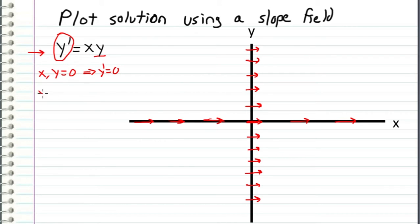Now whenever y is equal to 1, then the value of y prime is just going to be x because x times 1 is equal to x. So when x is equal to 1 right here, we have a slope of 1 and then we have a slope of 2. And whenever we go in the negative x direction, we have a slope of negative 1 and negative 2 and then negative 3.